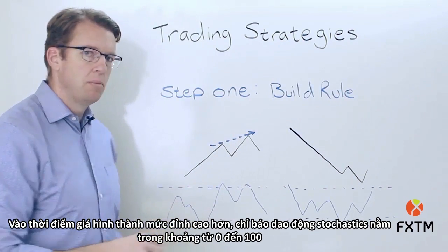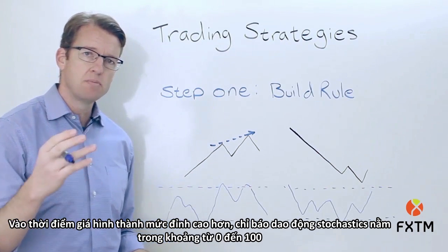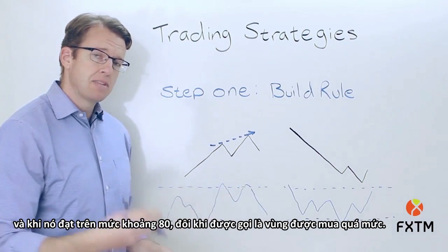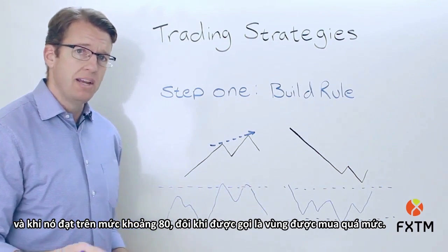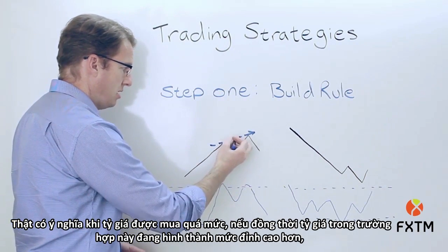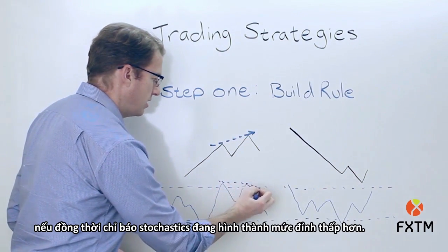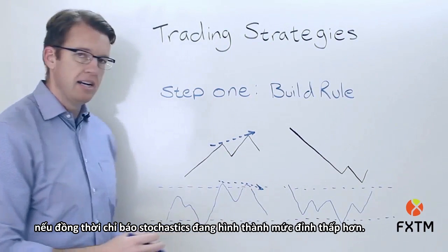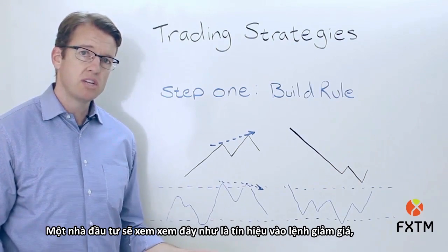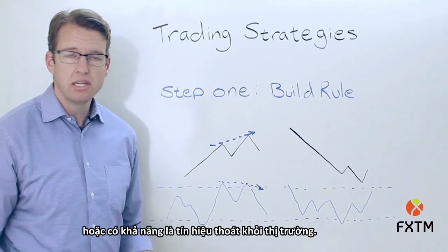At the same time that the price has been forming higher highs, the stochastics oscillator — which is a line that ranges between zero and 100, and when it gets above about 80 that's sometimes called an overbought region — it's meaningful when it's overbought if at the same time that the exchange rate is forming higher highs, the stochastics indicator is forming lower highs. This is a bearish divergence, and an investor would look at this as a bearish entry signal.